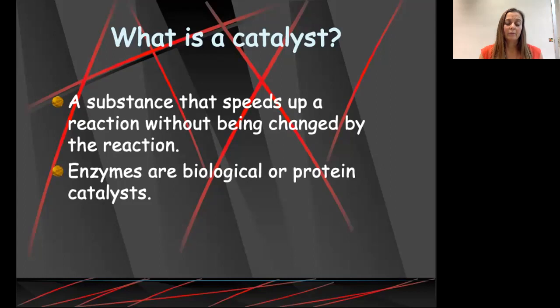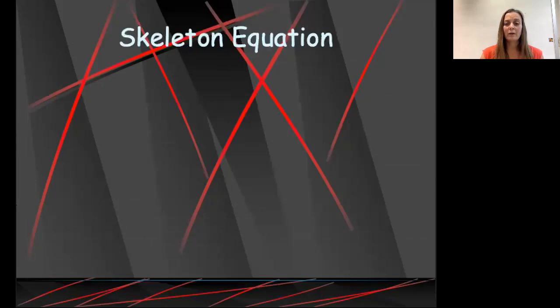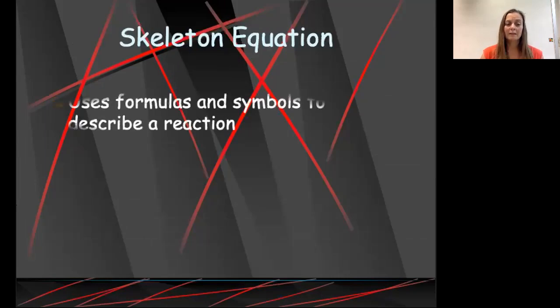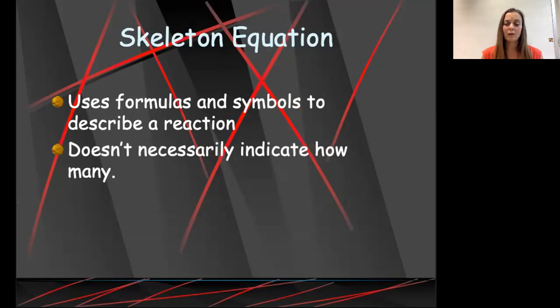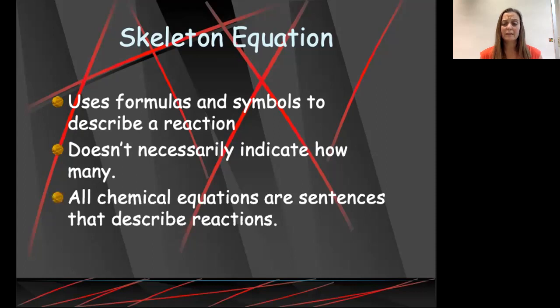Now we know all of the symbols that we use. We've talked about some of the ways that we can describe chemical reactions. Let's talk about what we call skeleton equations. A skeleton equation uses the formulas and the symbols to describe a reaction. It does not necessarily indicate how many of each molecule are reacting. Another name for a skeleton equation would be an unbalanced chemical equation. It's just the bare bones. It doesn't tell us exactly how many of anything there are.